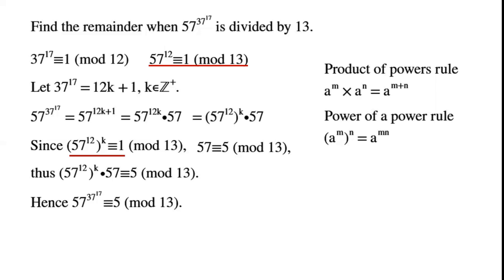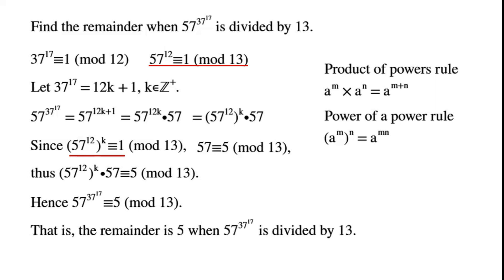Hence, 57 to the power of 37 to the power of 17 is congruent to 5 mod 13. That is, the remainder is 5 when 57 to the power of 37 to the power of 17 is divided by 13.